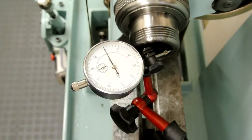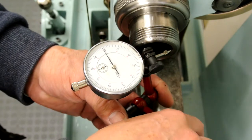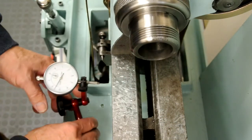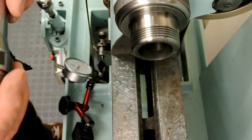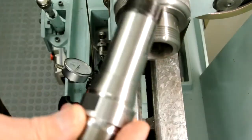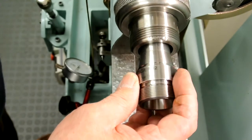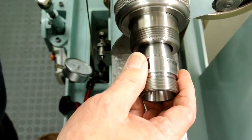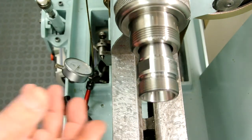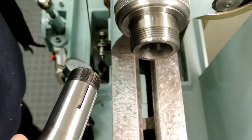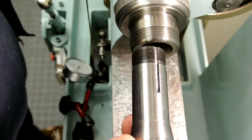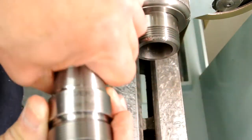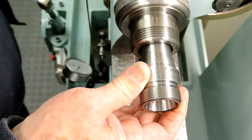I'll now fit in the ER32 collet chuck into the spindle and we'll see how that fares. I've now put in the ER32 collet chuck which is the one that came from China. Beautifully machined, looks the real business. So we'll just check now and see how this fits in.